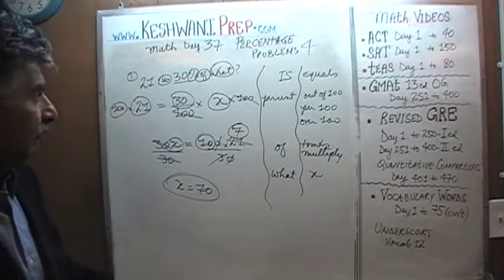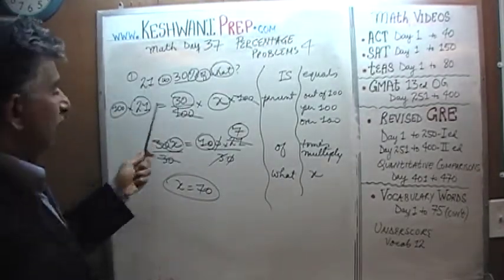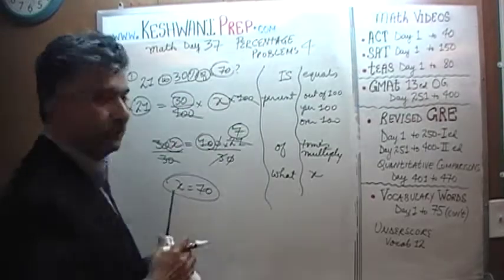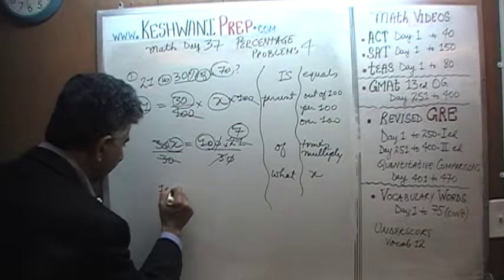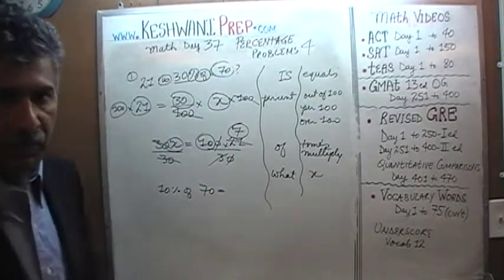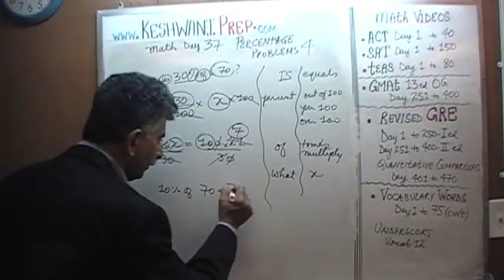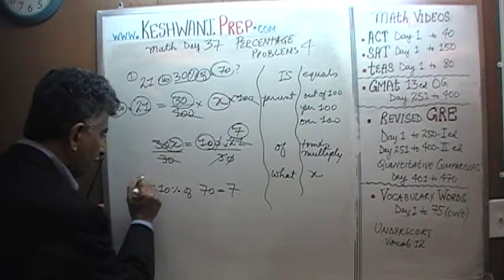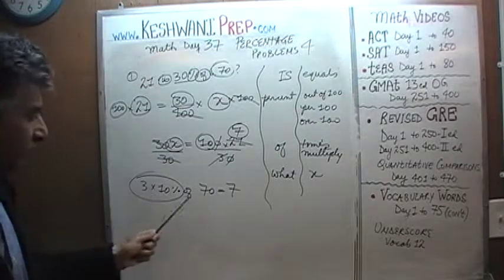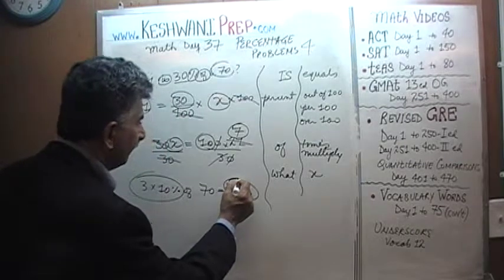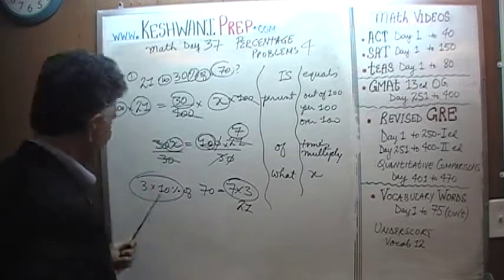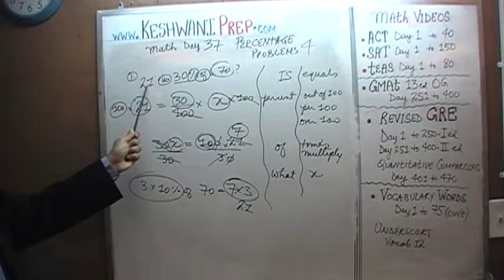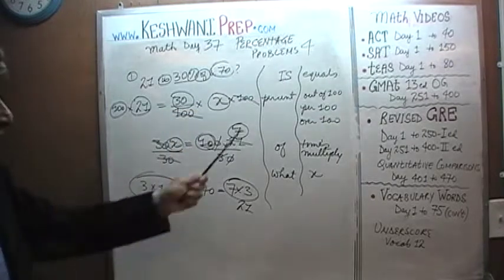Let's see if it makes sense by putting it back in the problem. We're claiming 21 is 30% of 70. Well, 10% of 70 is one-tenth of 70, which is 7. And 7 represents 10%. We don't want 10%, we want 30%, so we take times 3. Times 3 represents 30%, and 7 times 3 is 21 — which is exactly what the problem tells us. So 21 is 30% of 70 and that answer must be right.